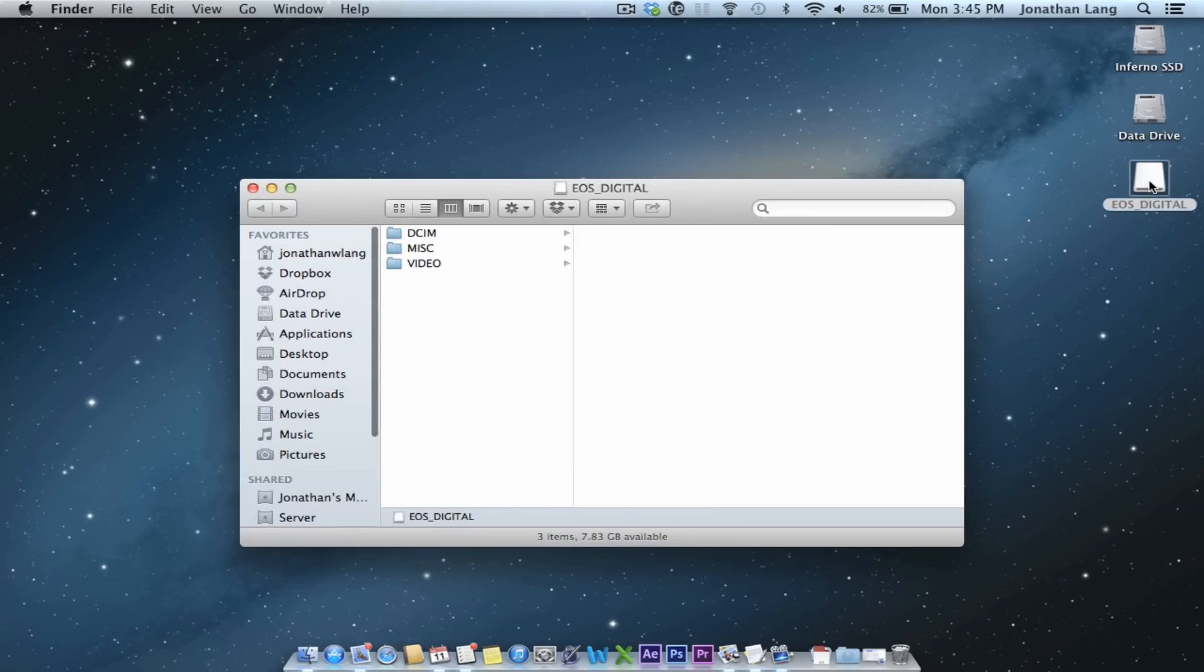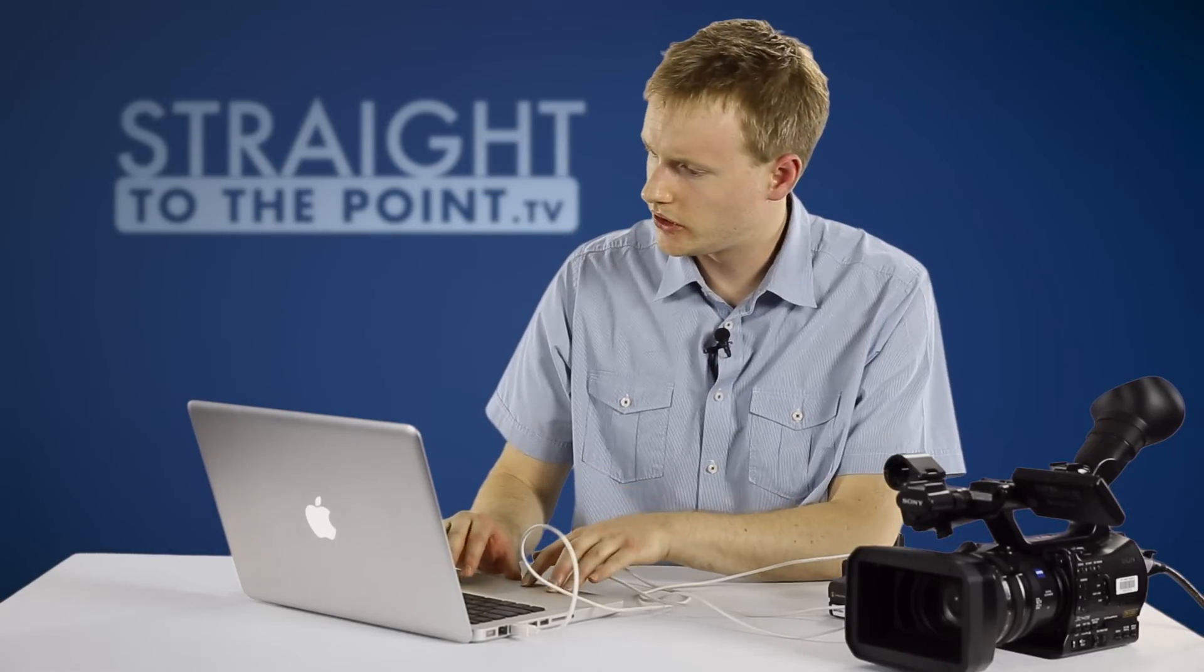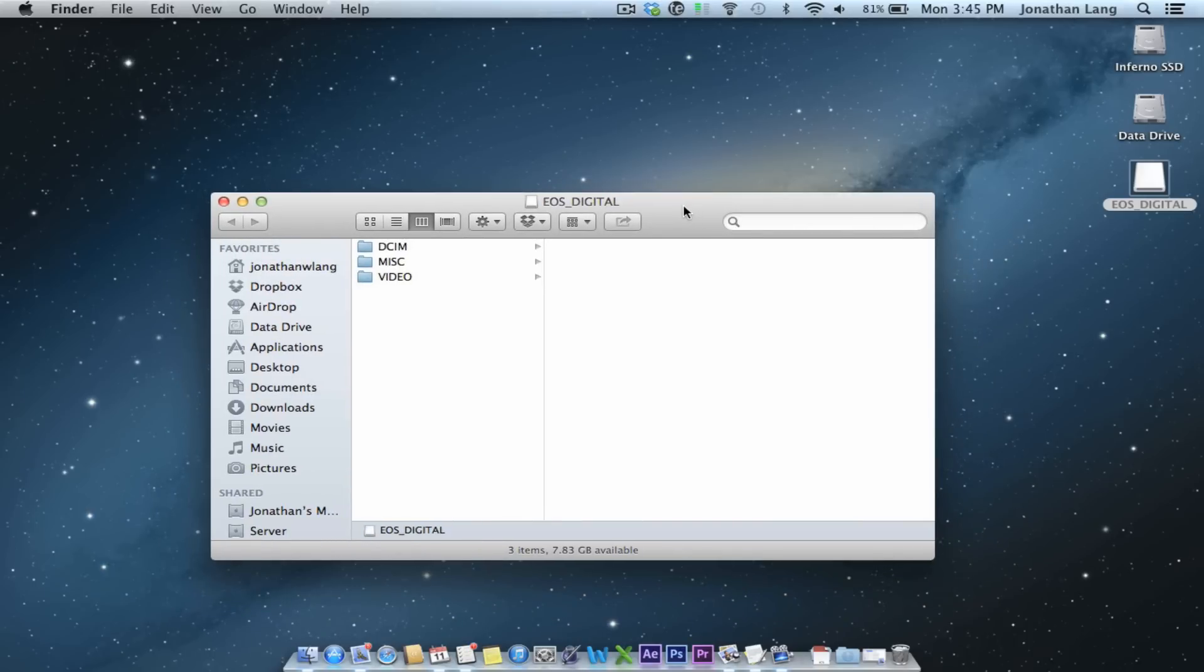So here it is, EOS Digital. Now yours would probably say something different. I'm using the CF card in an SLR video camera as well. So SLR video camera, SLR still camera. Once we go into that drive, whatever it is called...